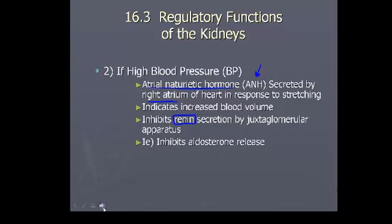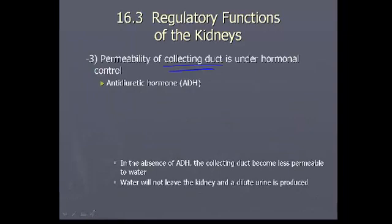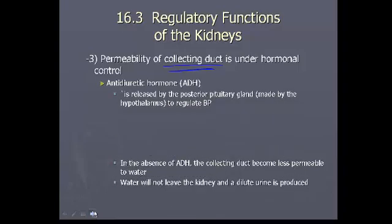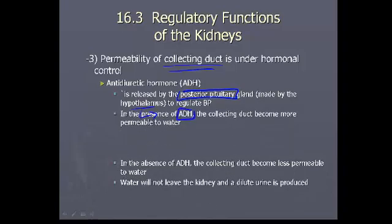The next hormone to know is anti-diuretic hormone, or ADH. It can be increased or decreased depending on what's happening in our excretory system. ADH is released by the posterior pituitary — which stores but does not make the hormone — it was made by the hypothalamus.